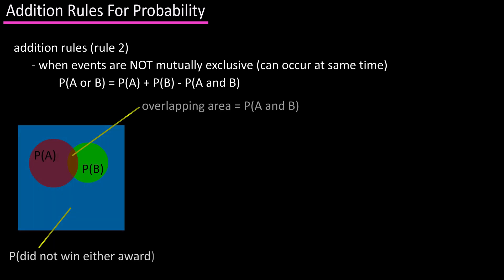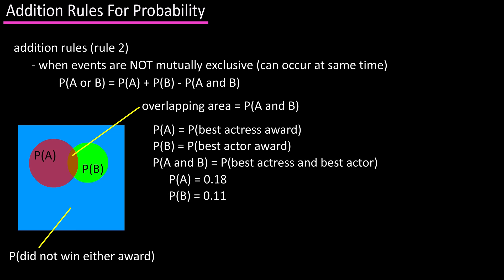Going back to our actress and actor award diagram, if we assign movies that won best actress as event A, and it has a probability of 0.18. And we assign movies that won best actor award as event B, and it has a probability of 0.11. And the overlapping area of A and B has a probability of 0.03.